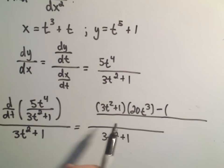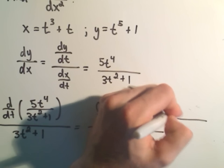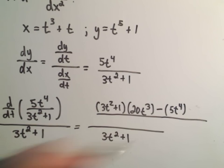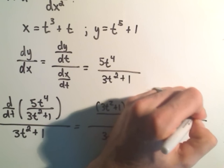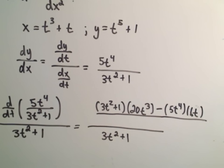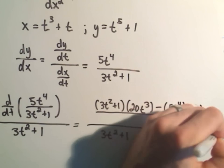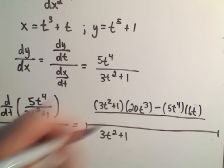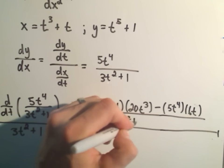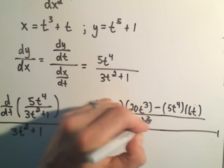minus, so the bottom times the derivative of the top, minus the top, times the derivative of the bottom, which will just be 6t to the first power. And that's all going to be divided by 3t squared plus 1 quantity squared.